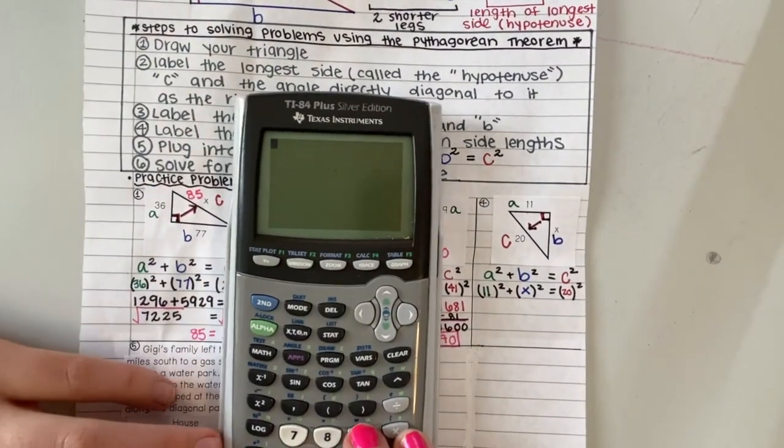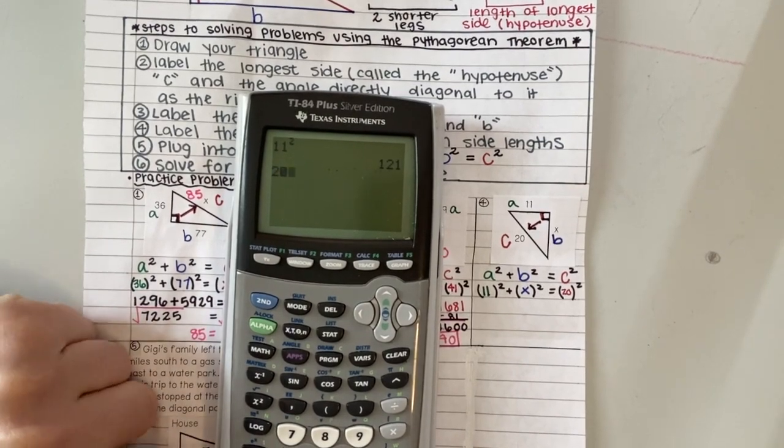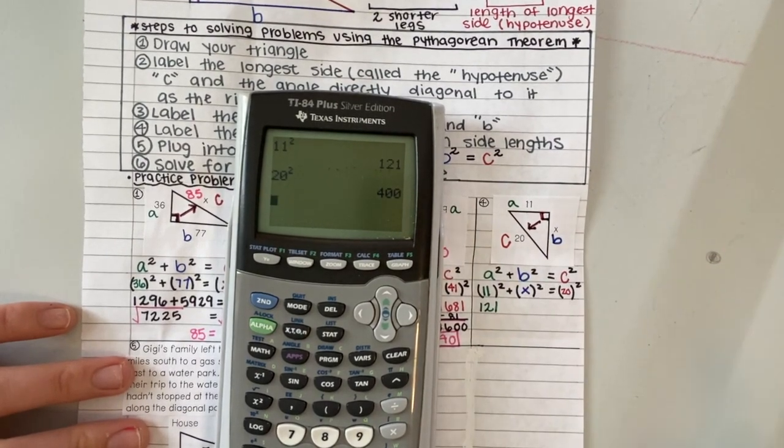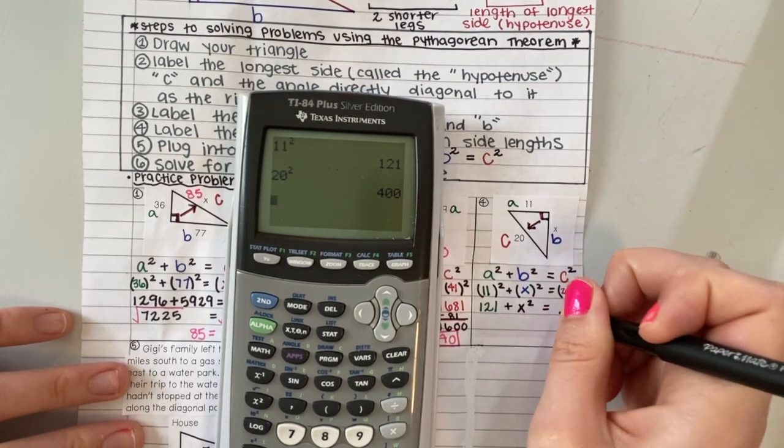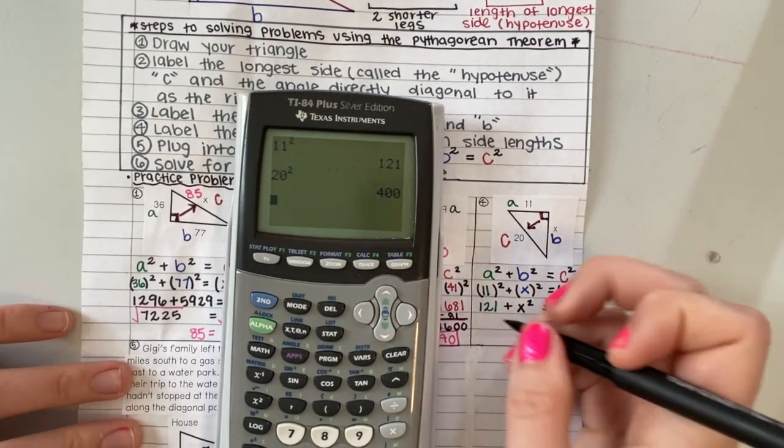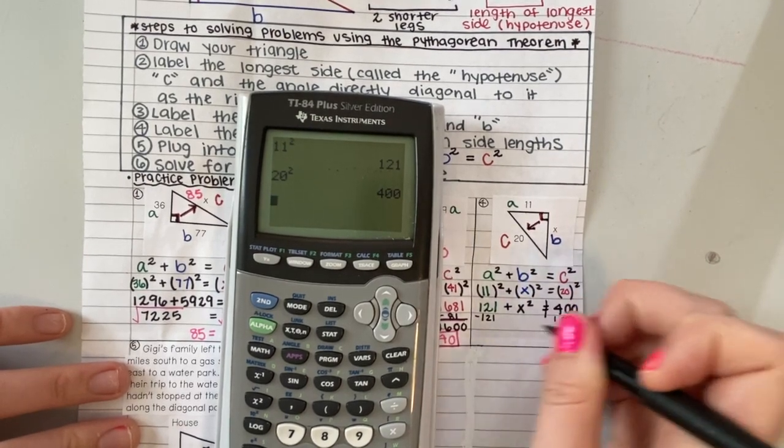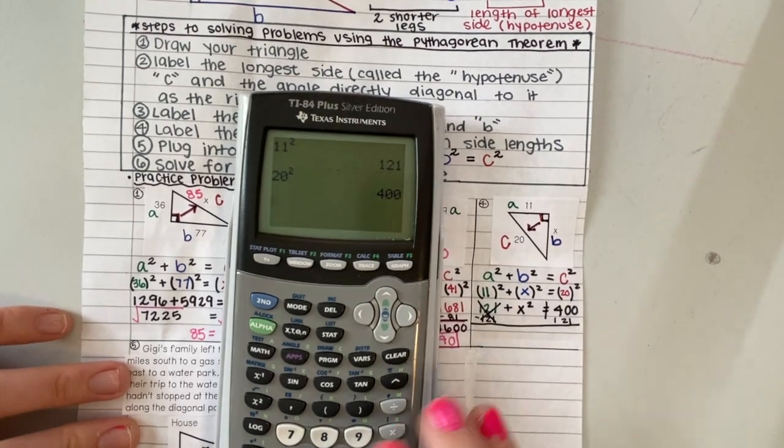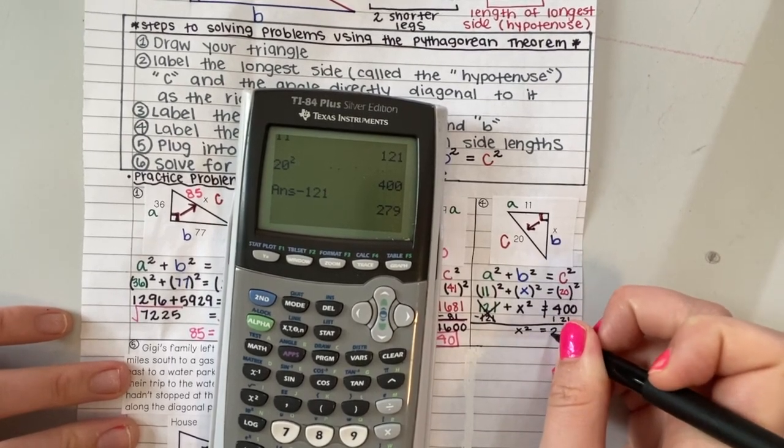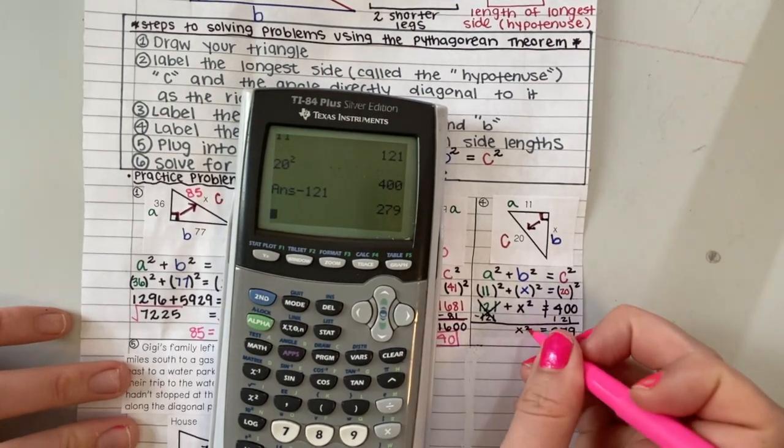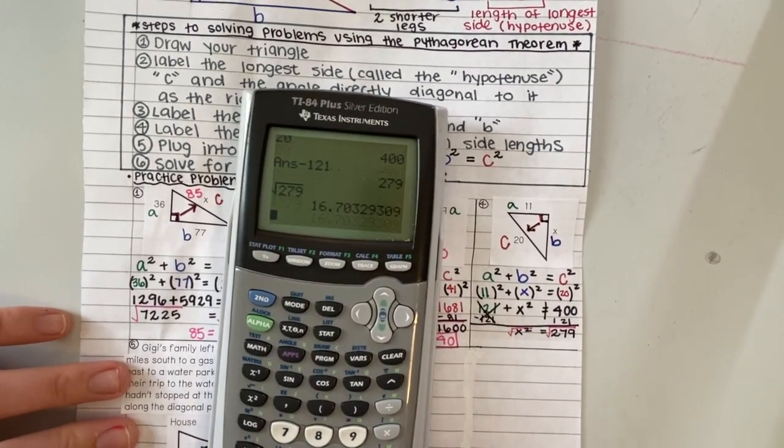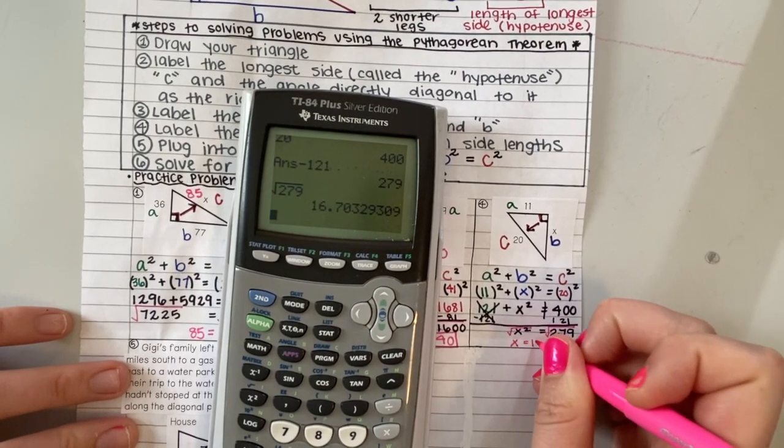I'm going to use my calculator and find what 11 squared is and 20 squared. We have 121 plus X squared equals 400. I want X on a side totally by itself, so I'm going to subtract 121 from both sides before I do anything else. 400 minus 121 is 279. In order to get rid of this little squared, we take the square root. The square root of 279 is 16.7.